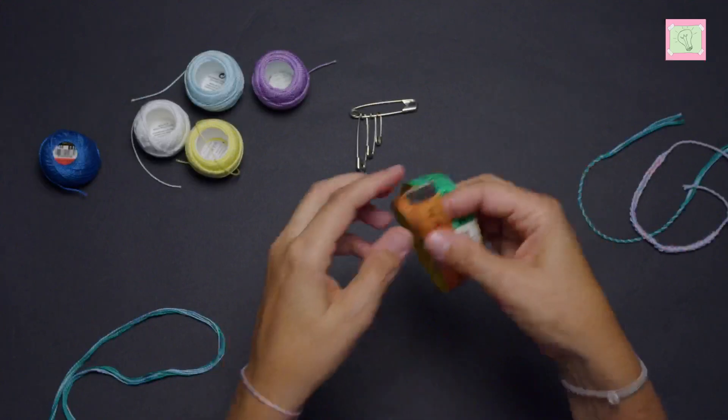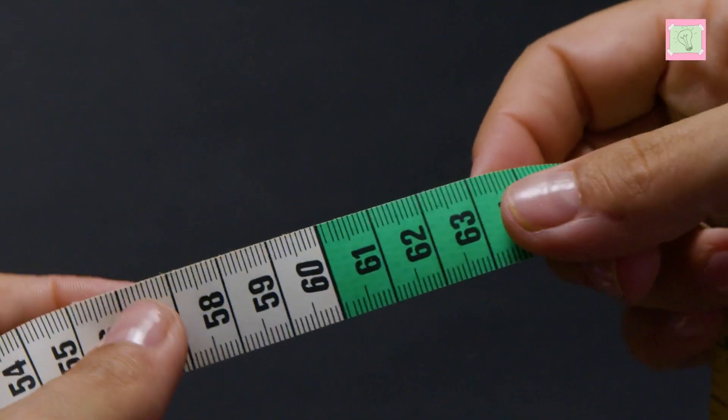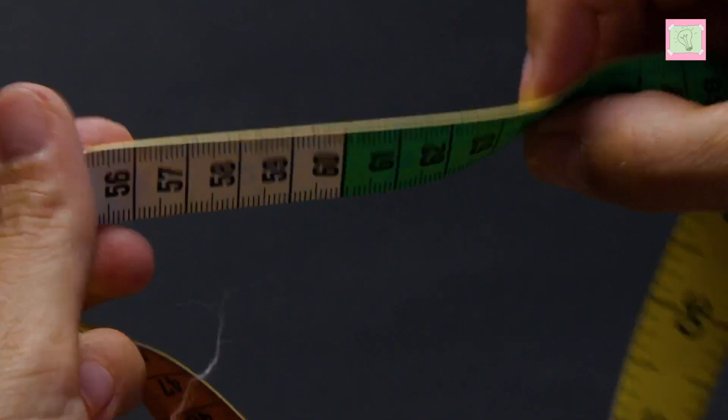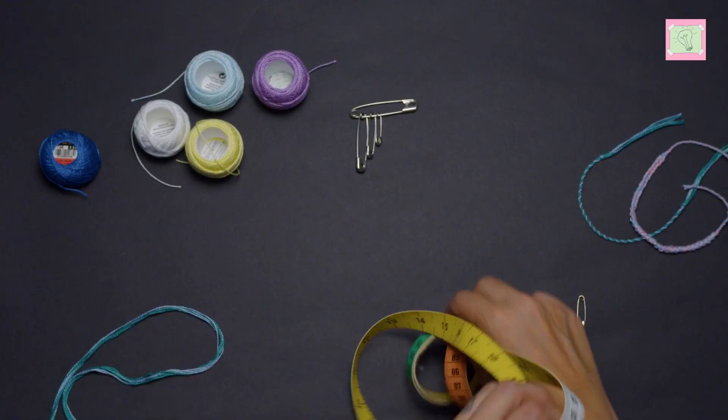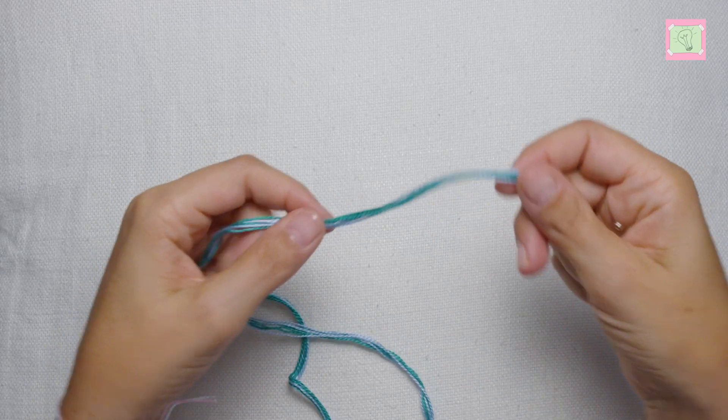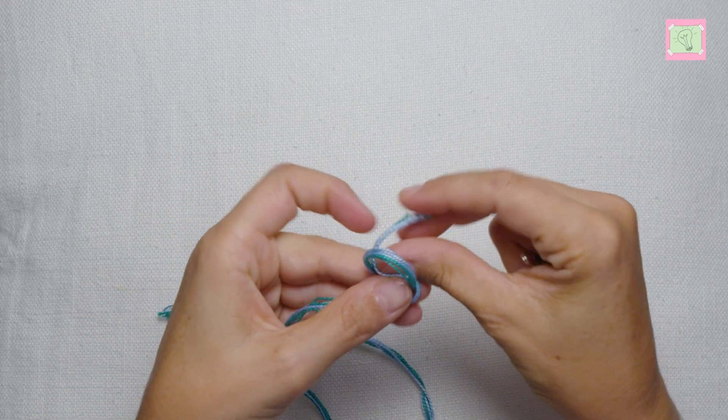For a twisted bracelet you need threads that are about 60 cm or 24 inches long. I use two colors and three threads of each color. About 10 cm from the end of the thread I tie a knot.